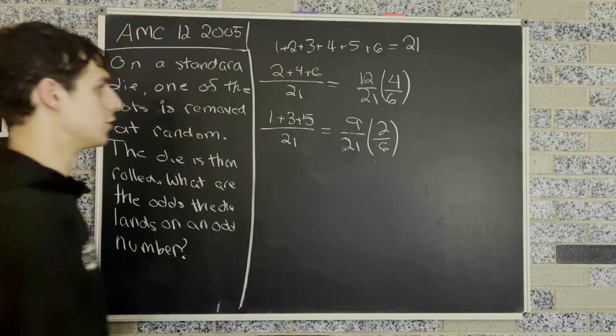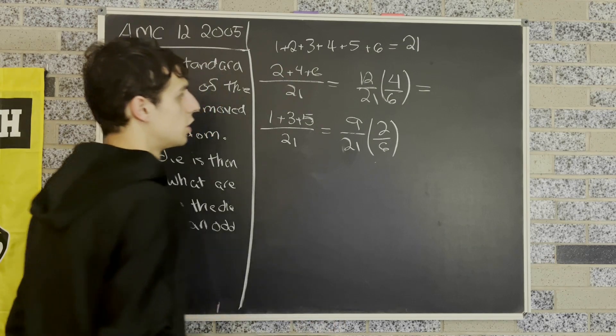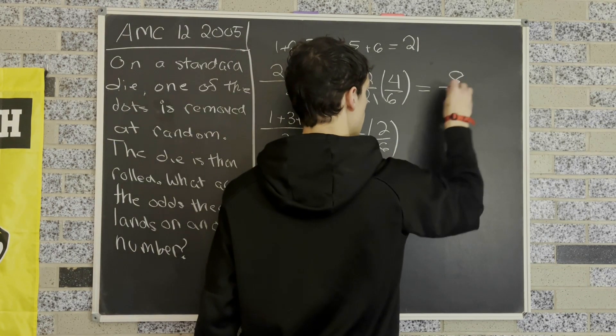But now all we have to do is just add these two together. So first here we get 12 over 6, that's 2, and then 2 times 4 over 21, so it's going to be 8 over 21.